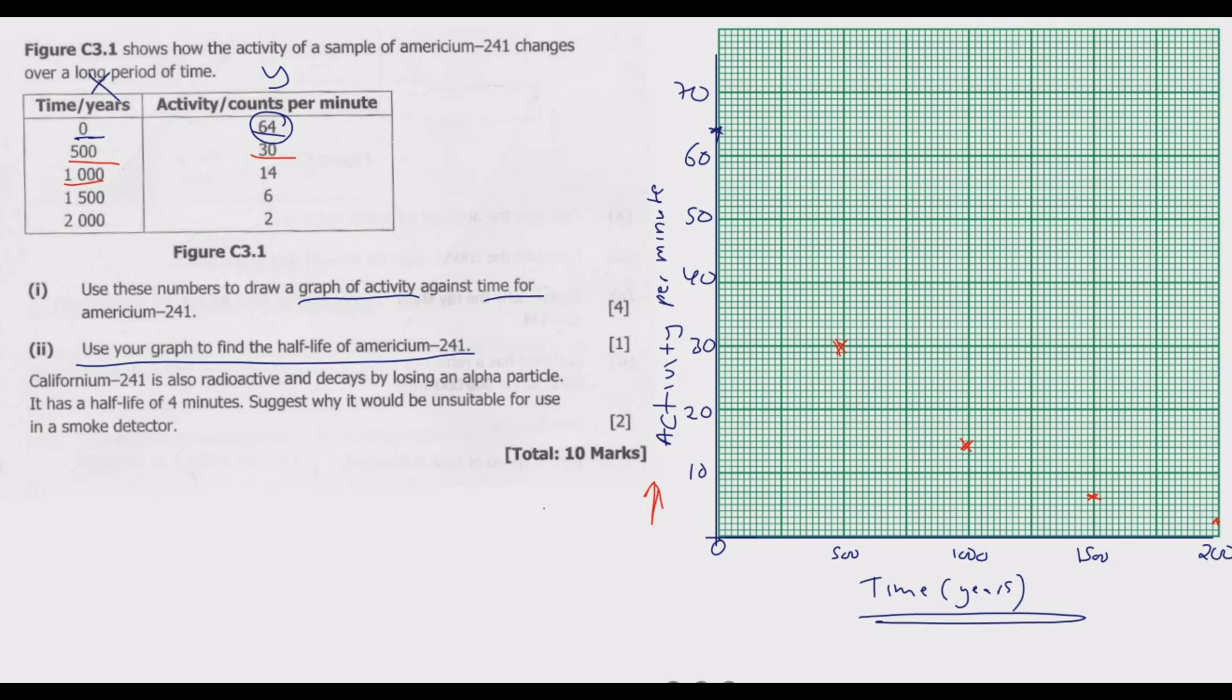Once you've plotted the points, we can join these lines. Join them with a smooth curve. It should look like this, proceeding toward zero. But we haven't been given data up to zero. This is how you get the four marks.